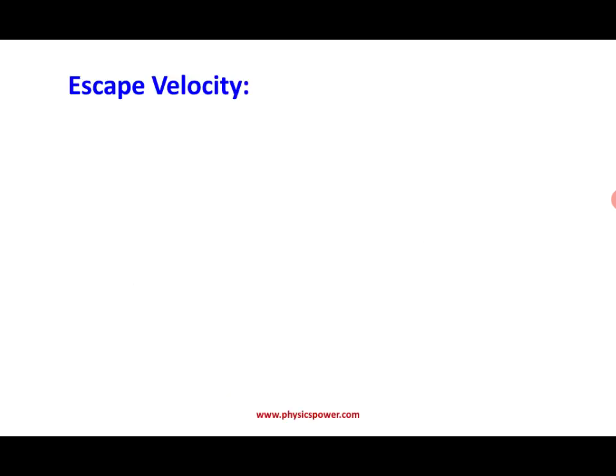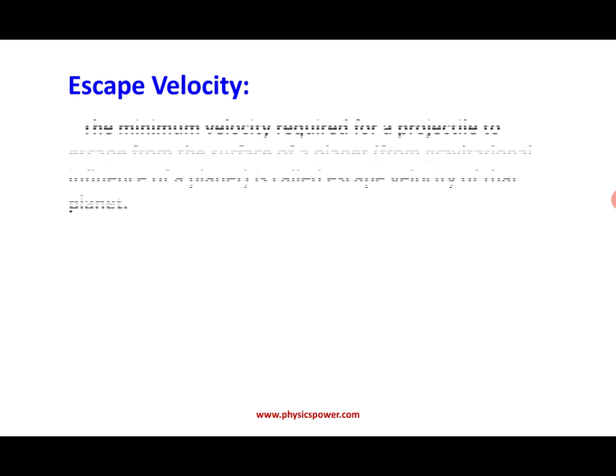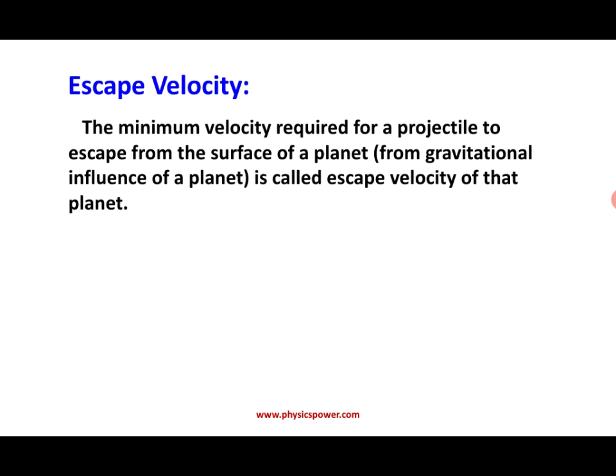Now I am going to give the details about the definition. Escape velocity means it is the minimum velocity required for a projectile to escape from the surface of the planet — that is, from the gravitational influence of a planet. The body or projectile should have this minimum velocity to escape from the gravitational field. A projectile is any body projected at an angle other than 90 degrees to the horizontal. Such a body normally follows a parabolic path, but if thrown with escape velocity, it cannot come back to the Earth's surface.